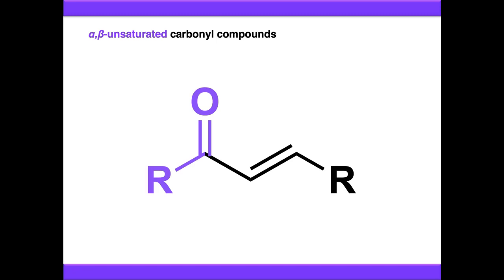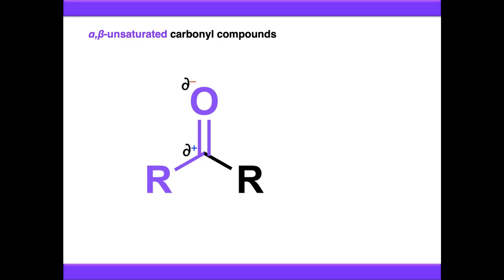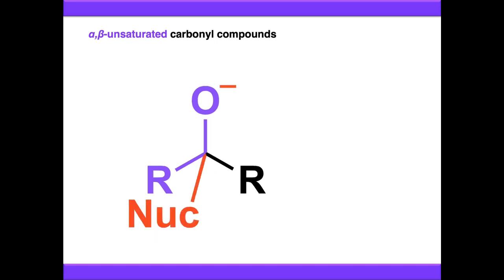On the other hand, if we're looking at carbonyls, we know from the beginning of the second year module that carbonyls have a permanent dipole. So we can draw a definite delta-positive, delta-negative descriptor on this bond. When nucleophiles come in, they attack the delta-positive end and kick the electrons up onto oxygen, forming a tetrahedral intermediate with an anionic oxygen. The oxygen is reasonably happy to take that pair of electrons, so that's a viable reaction — that's why carbonyls react with nucleophiles.